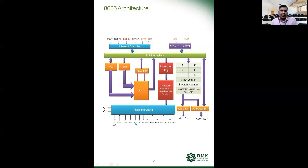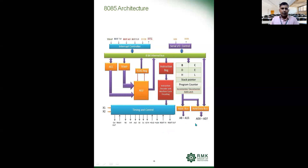When ALE is high — since it is activated by an active high signal — the address-cum-data bus acts as an address bus. When ALE goes low, it becomes a data bus. This allows effective use of pins and processor resources using the ALE signal along with AD0 to AD7. S0 and S1 are status signals which represent the type of operation being performed.